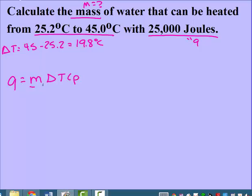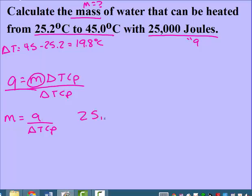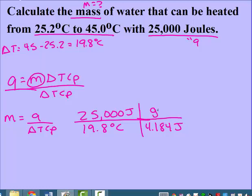So we're looking for mass. Rearranging our equation, we have to divide by delta T times Cp. And now we can plug things in: our heat, our change in temperature, and our Cp. Because it's joules, we have to use the joule one, which is 4.184 joules per gram degrees Celsius.